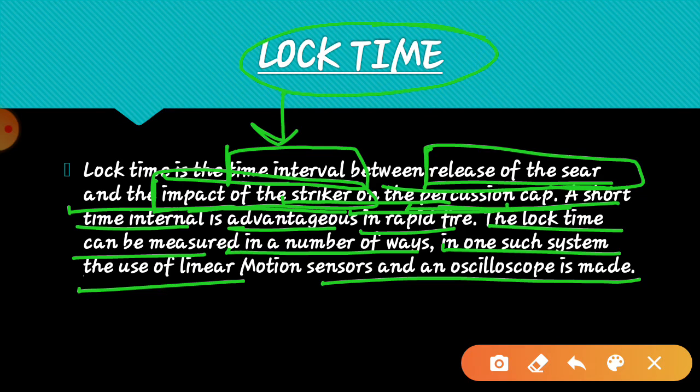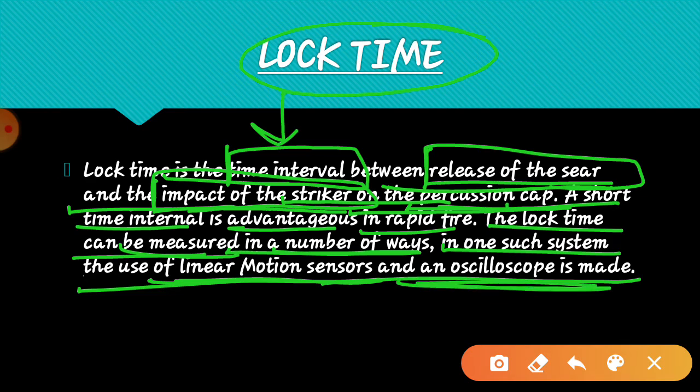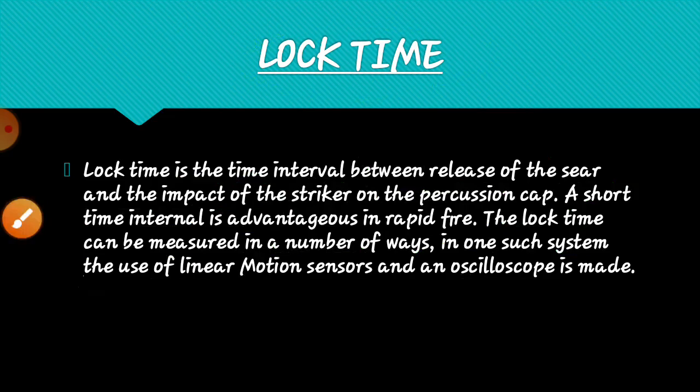A short lock time interval is advantageous in rapid fire. We can measure lock time in a number of ways - in one such system, we can use linear motion sensors, or an oscilloscope can be used to measure lock time. This is the lock time. Now we move forward to the next topic: ignition time.